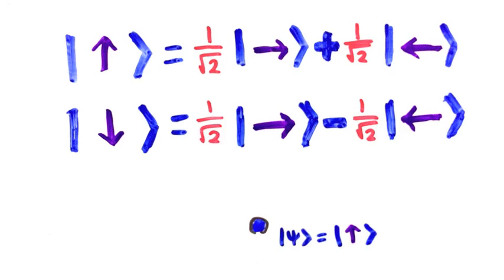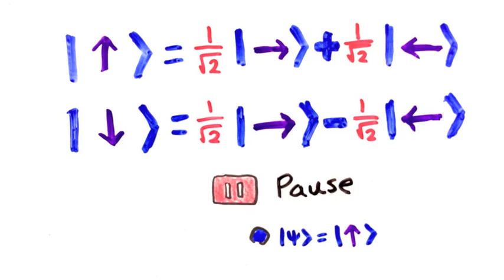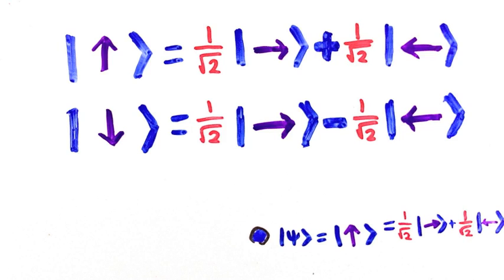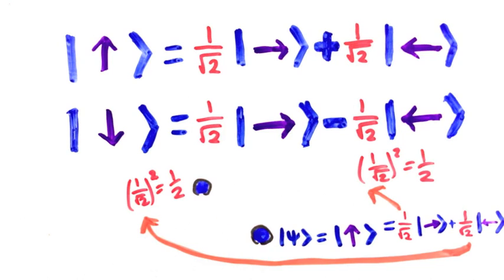If I had a particle that was up and I decided to measure its left or rightness, take a second to predict what would happen, and predict the same for the down particle. The answer is, for both cases, there is a 50% chance of going left or right.